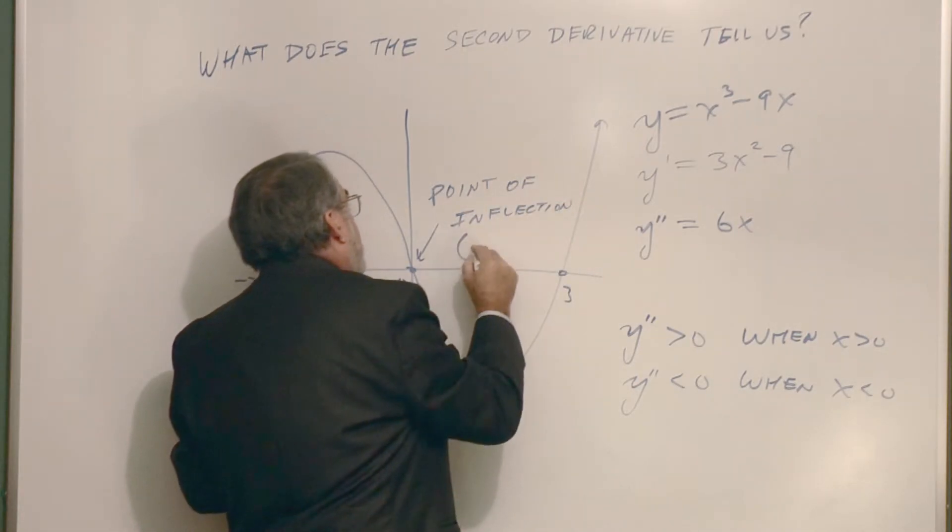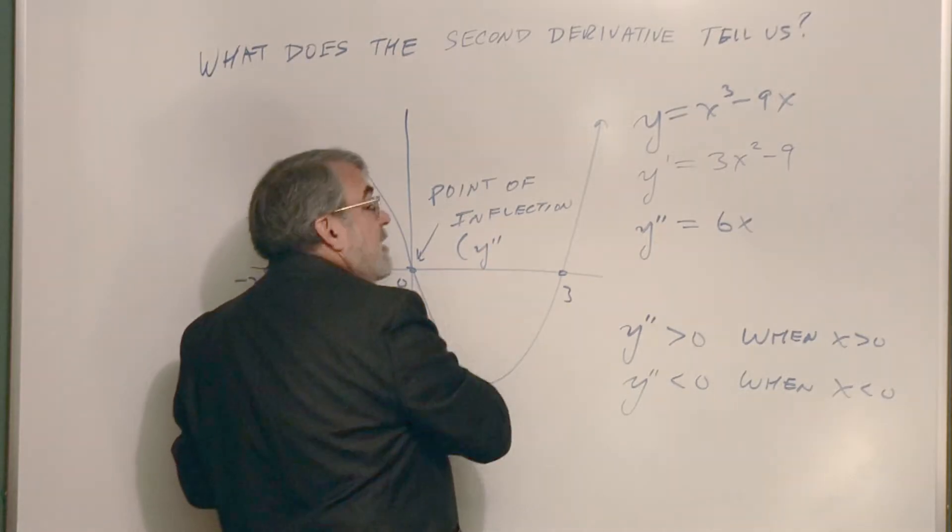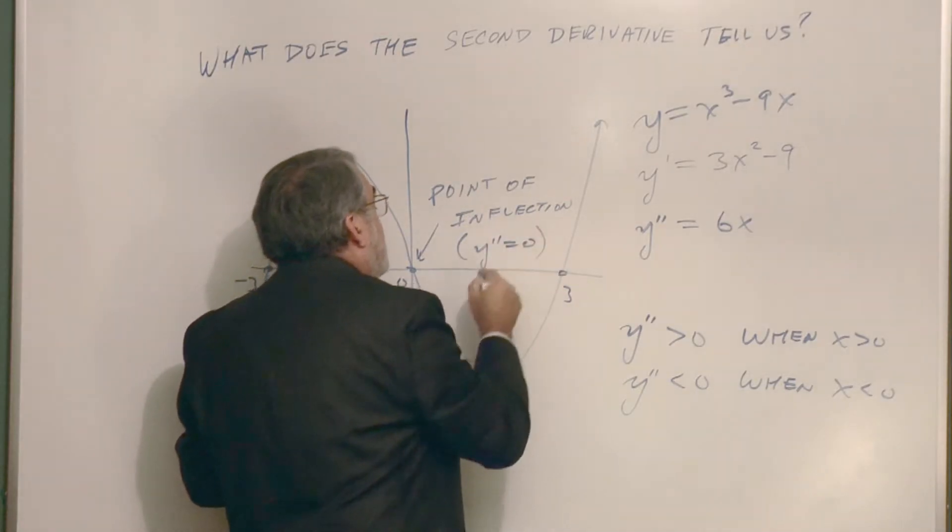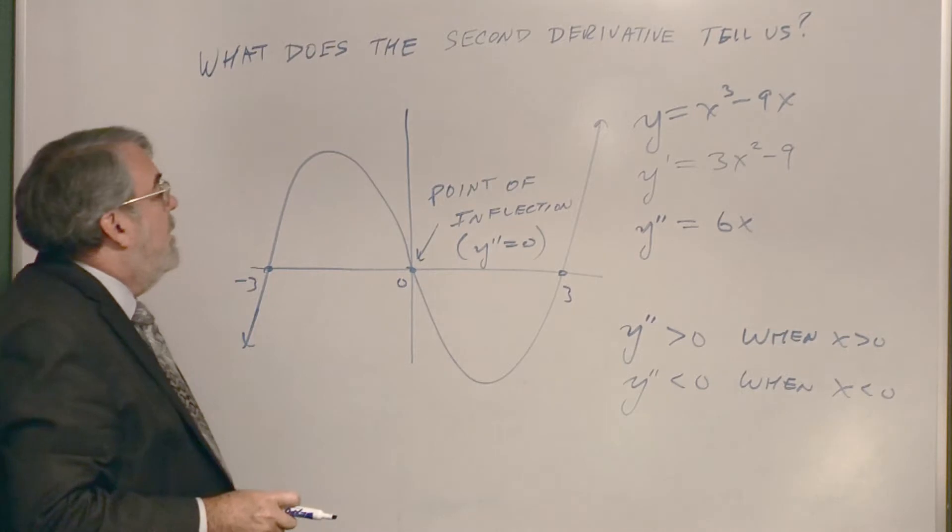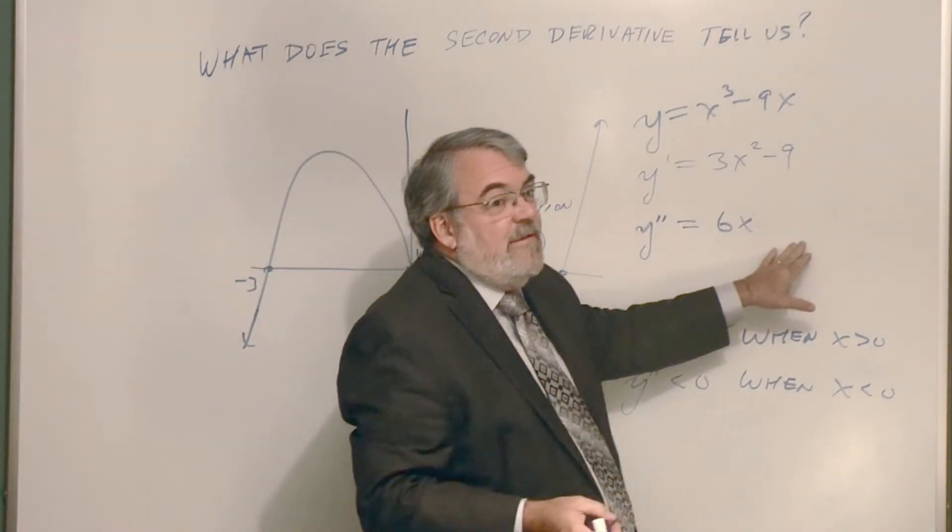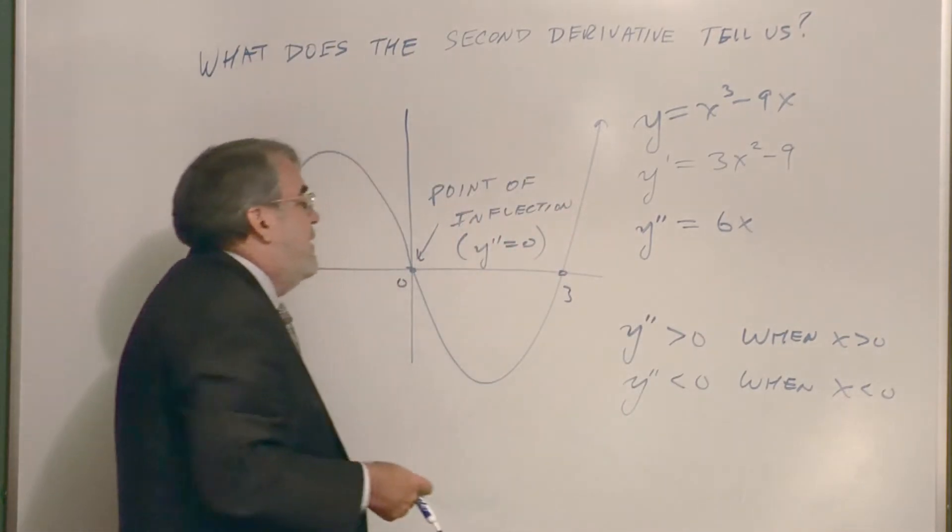And the point of inflection is where the second derivative is zero. All right. And guess what? If we set this equal to zero, x equals zero. That's the point of inflection.